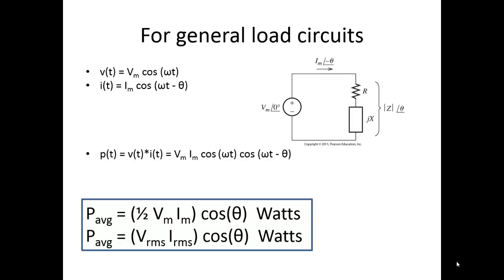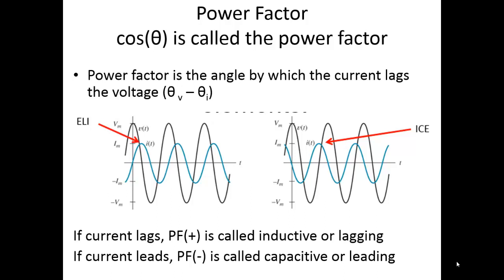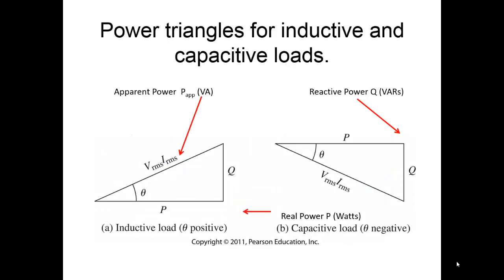So what is this cosine of theta? It has a special name: it's called the power factor. The cosine of theta is the power factor, and it's defined as the angle by which the current lags the voltage, or theta_v minus theta_i. For inductive circuits, the current lags the voltage. In most industrial situations, we have much more inductance due to motors — most industrial systems have very large motors, and motors are mostly made up of inductors — so we generate power factor. If the power factor is positive, it's called inductive. If the power factor is negative, it's called capacitive.